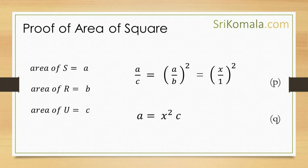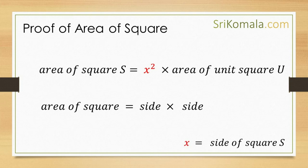Equation p can be expressed as equation q: a is equal to the square of x times c. This means that the area of square S is equal to the square of x times the area of unit square. Please remember that x is actually the side of square S, and the area of unit square is 1. Thus, it can be understood that the area of the square is side times side. This whole process has proven the fact that the area of square is side times side.